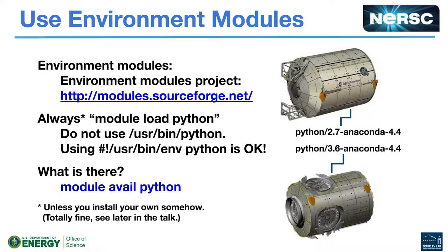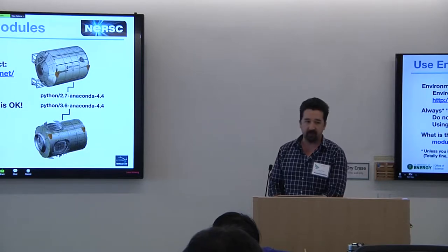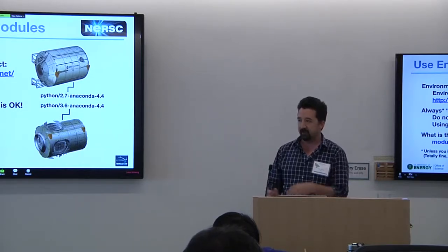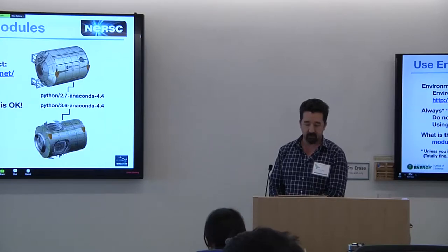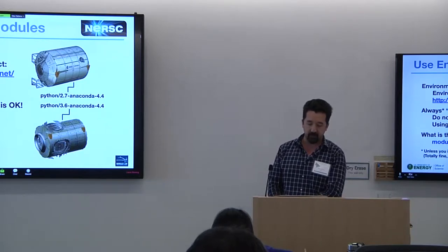This morning you learned about the software module system at NERSC. The way to get Python working at NERSC is through modules. You must always be sure to load a Python module. Do not ever use /usr/bin/python — that's the system Python that came with the Cray, so it's a little bit old. You can do the standard /usr/bin/env python thing once you have a module loaded. If you don't know what versions of Python modules are available on Cori, you can do 'module avail python'.